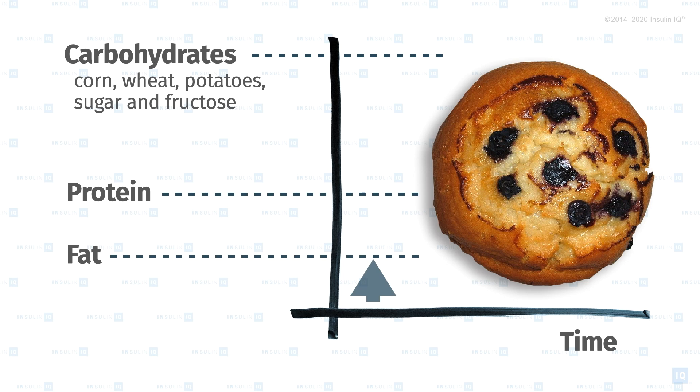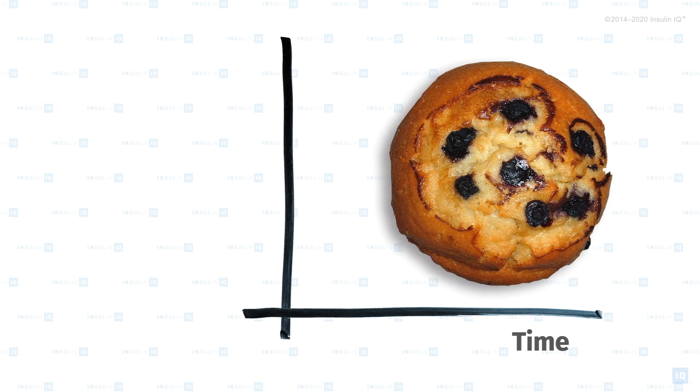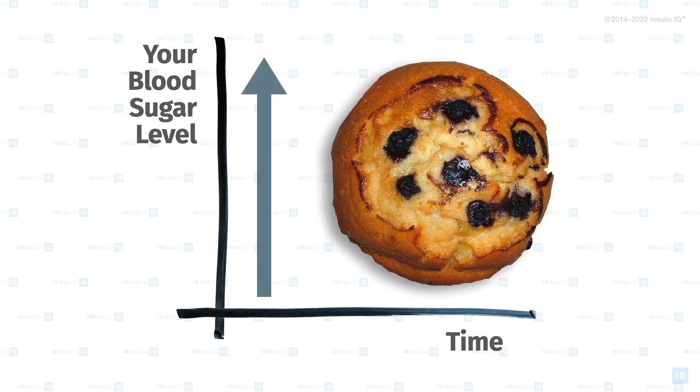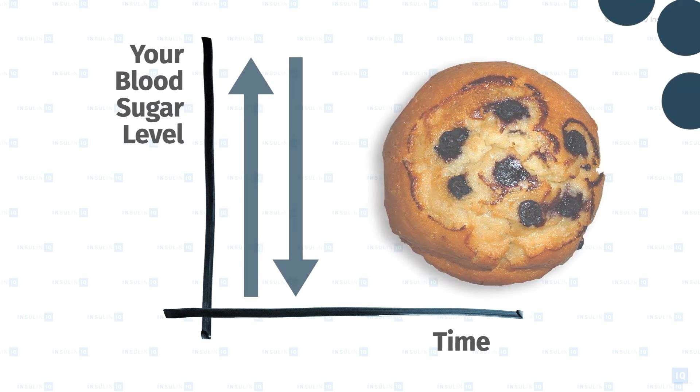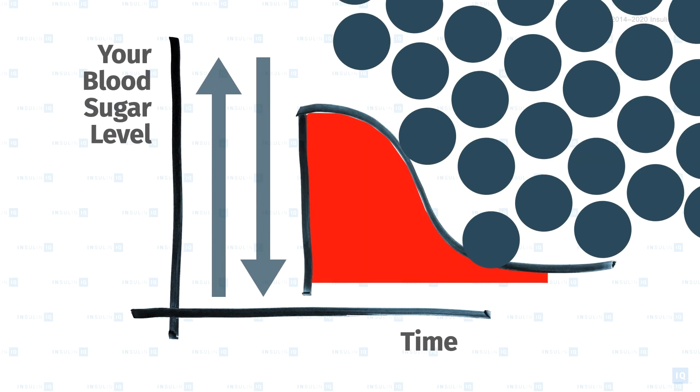So when you ate that blueberry muffin and spiked your blood sugar, your body immediately went to work trying to bring down that level. It did that by having your pancreas dump a bunch of insulin into your bloodstream. And about the time it started to help and drive the level down, it was lunchtime.